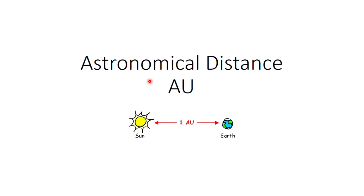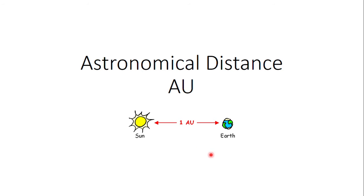In this presentation, you are going to learn a new unit called Astronomical Unit. So, what is Astronomical Unit? It is the unit of distance that is used to express the distance between the planets in our solar system.